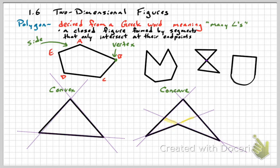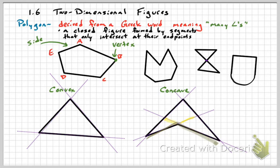A concave polygon, by contrast, has at least one side that 'caves in,' creating an empty space. When you extend the sides of a concave polygon, some dotted lines pass through the interior. An easy memory trick: 'concave' has sides that cave in. Polygons overall must have straight edges, non-crossing sides, and no openings.